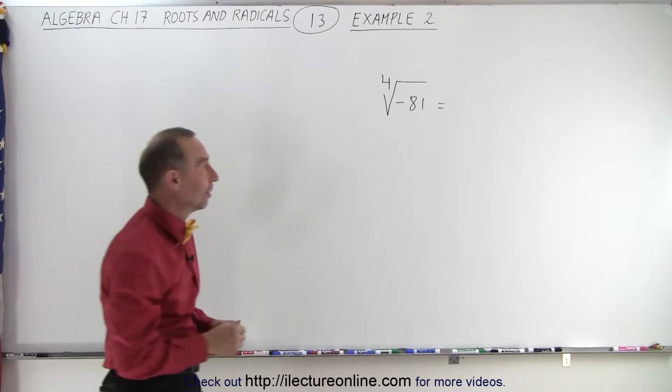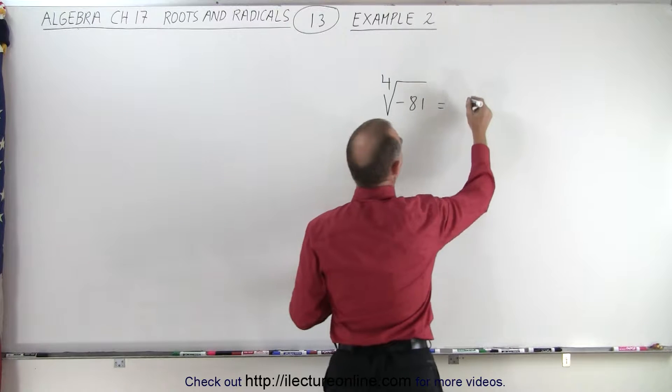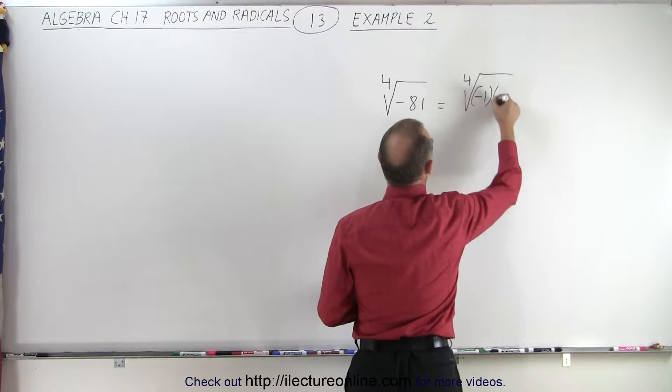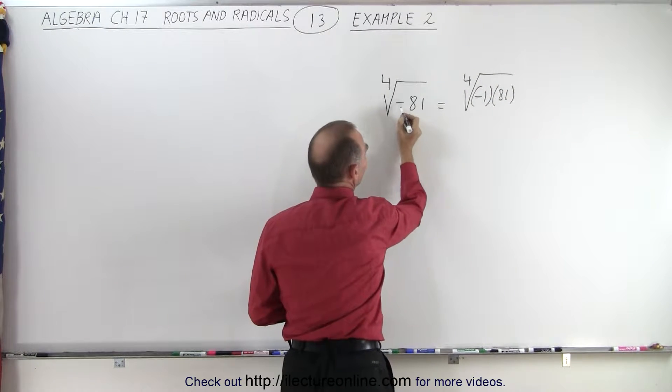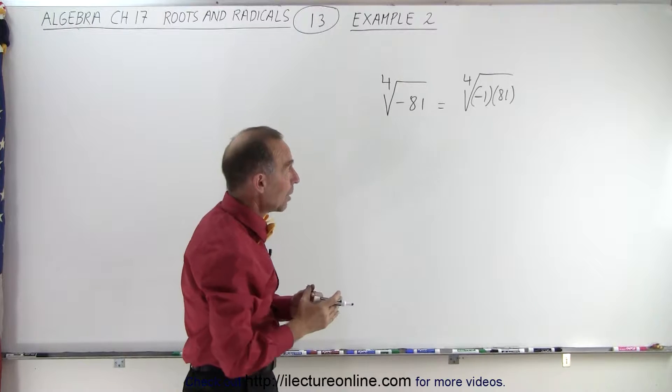Well, let's see what happens. But again, we need to interpret this as follows. This can be written as the fourth root of negative 1 multiplied times 81. So we can go ahead and see that negative sign is essentially multiplying times a negative 1.